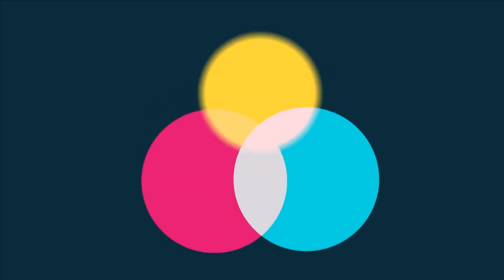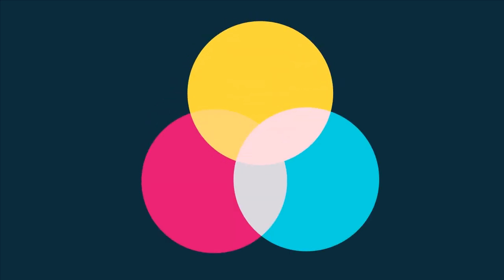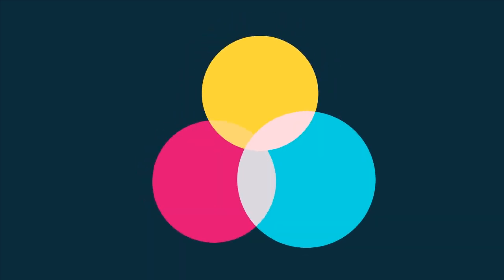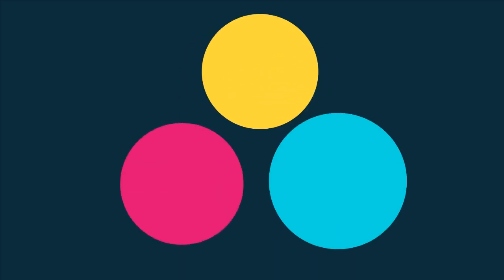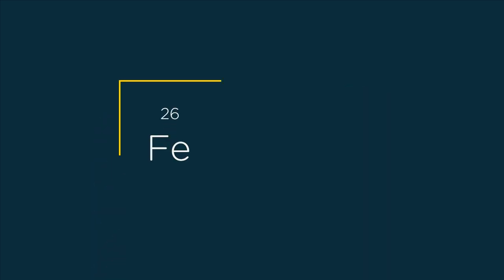An element is a substance that cannot be broken down into anything simpler. A mixture is a substance consisting of two or more substances mixed together, however not in fixed proportions and not chemically bonded. And lastly, a compound consists of two or more elements that are chemically combined. Through the rest of the lesson, the two elements iron and sulfur will serve us as examples.